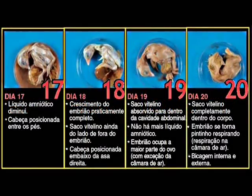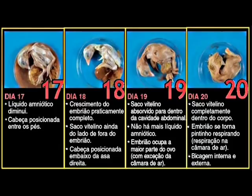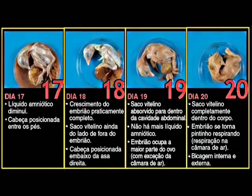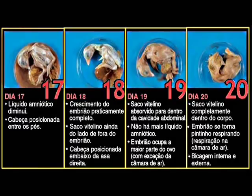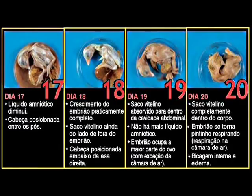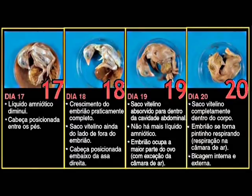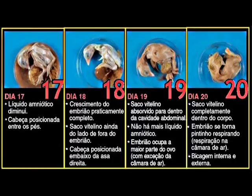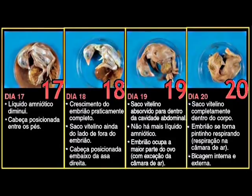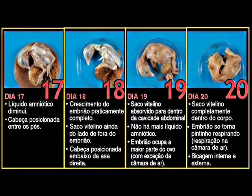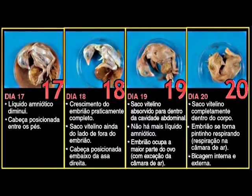Cabeça posicionada entre os pés. Crescimento do embrião praticamente completo. Saco vitilino ainda do lado de fora do embrião. Cabeça posicionada embaixo da asa direita. Saco vitilino absorvido para dentro da cavidade abdominal. Não há mais líquido amniótico. O embrião ocupa a maior parte do ovo, com exceção da câmara de ar. Saco vitilino completamente dentro do corpo.